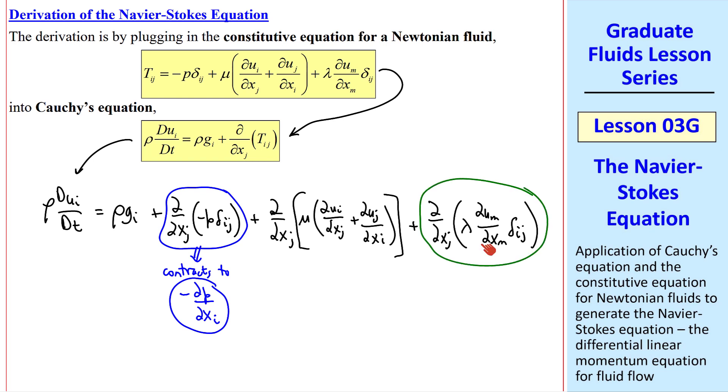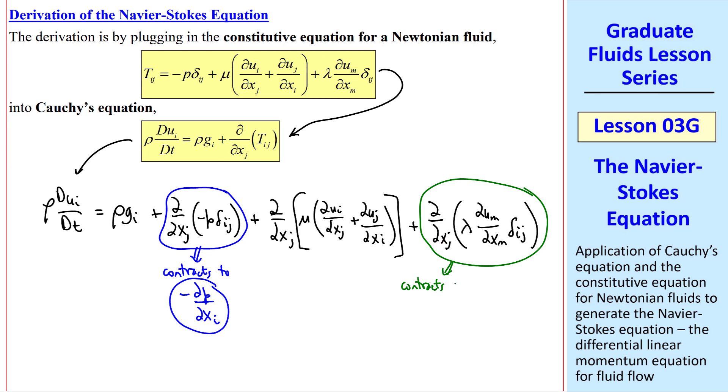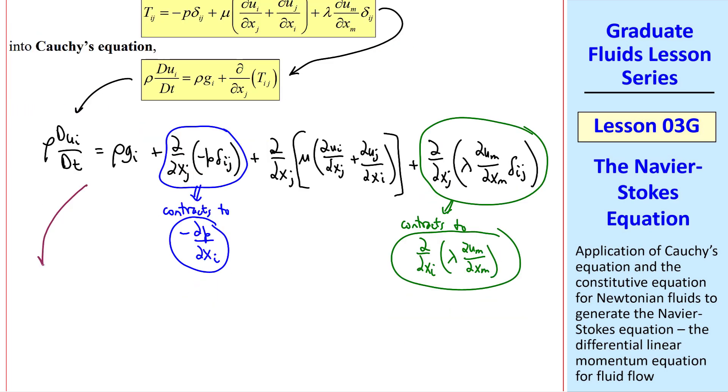Similarly, this last term is non-zero only when i equal j. So this contracts to del del xi, lambda del um del xm.